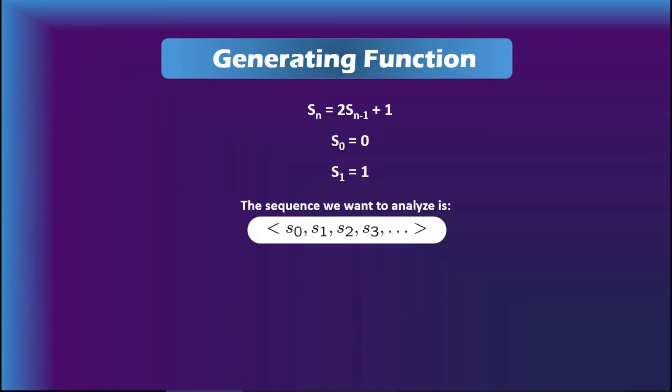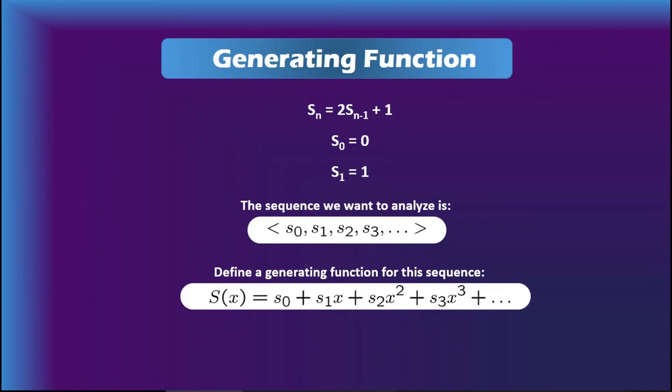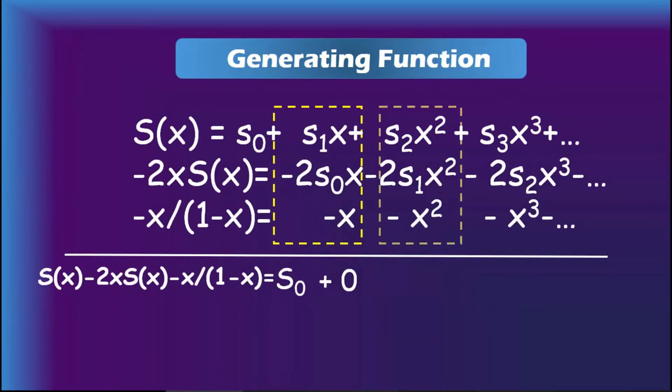So we know the relation and also the initial condition. From that we can get a sequence: s_0, s_1, s_2, s_3, and so on. Now we can define a generating function from the sequence, which is S(x) equals s_0 plus s_1 x plus s_2 x squared plus s_3 x cubed and so on.